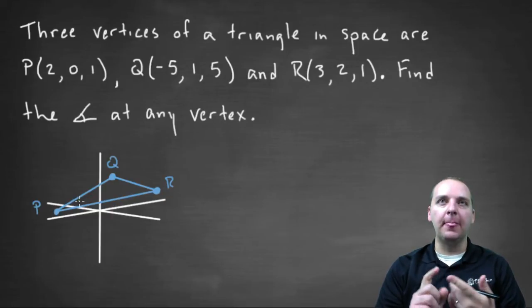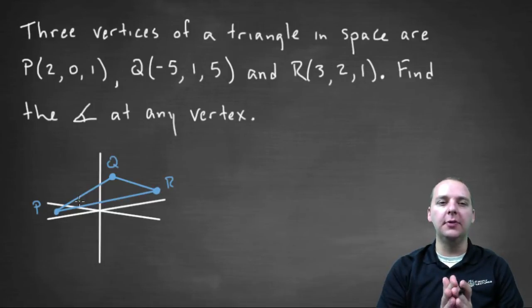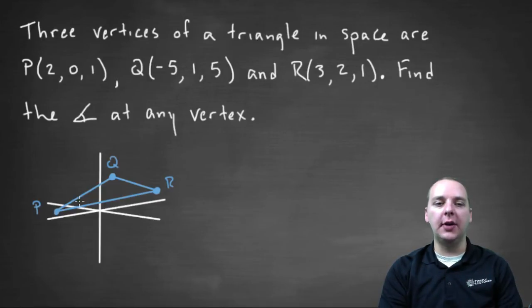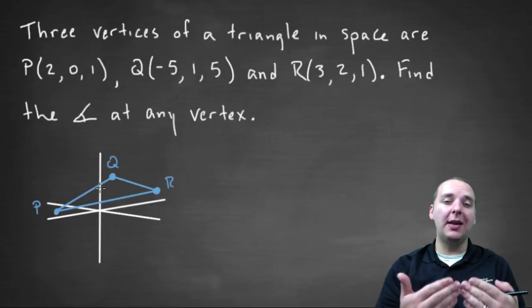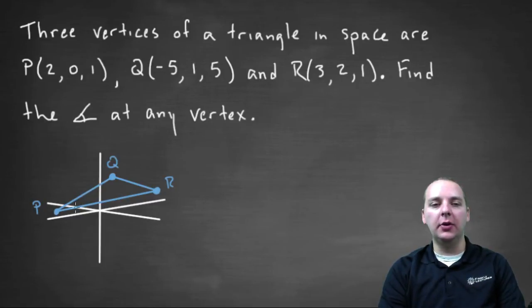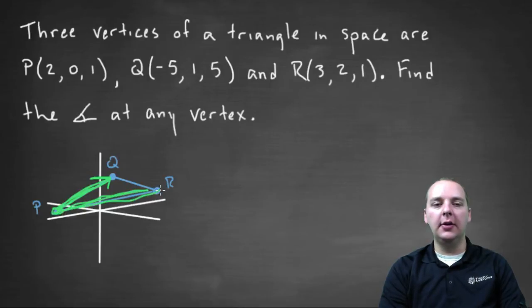There was a formula that let us find the angle between two vectors using the dot product, and we've covered it in some recent videos. Well, if we can somehow create two vectors out of these three line segments, then we can find the angle between those two vectors and we'd have our answer. So for this example I'm going to use P to Q as one vector, doing terminal minus initial to write it in component form, and then P to R to get another vector.